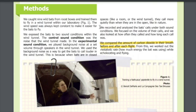We recorded and analyzed the bats' calls under both sound conditions. We focused on the volume of their calls and also looked at how often they called and how long each call was. We compared the amount of carbon dioxide in their breath before and after each flight. From this, we worked out the metabolic rate—how much energy the bat was using while echolocating and flying.